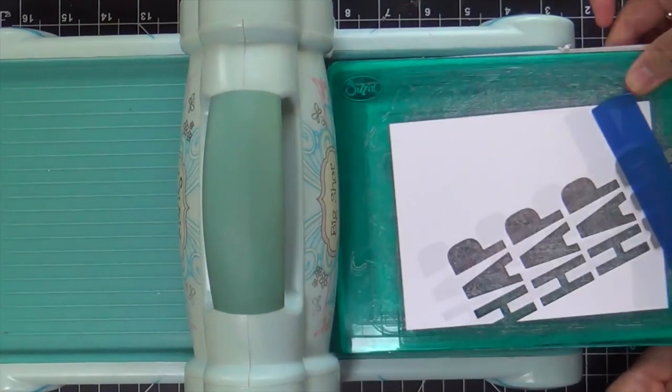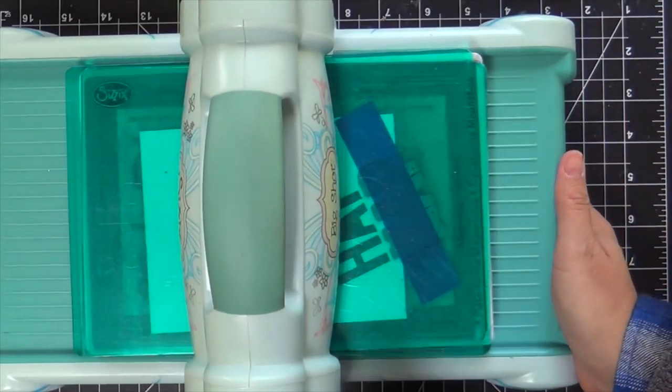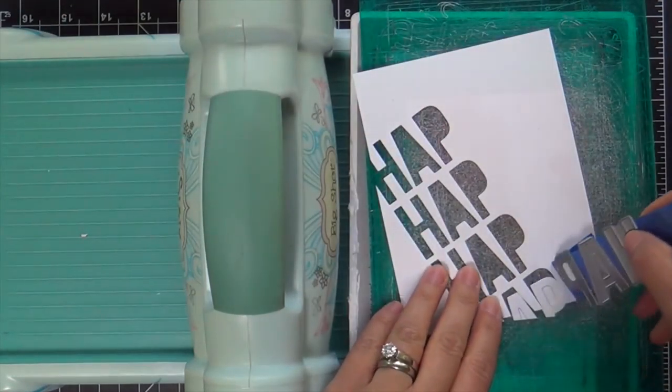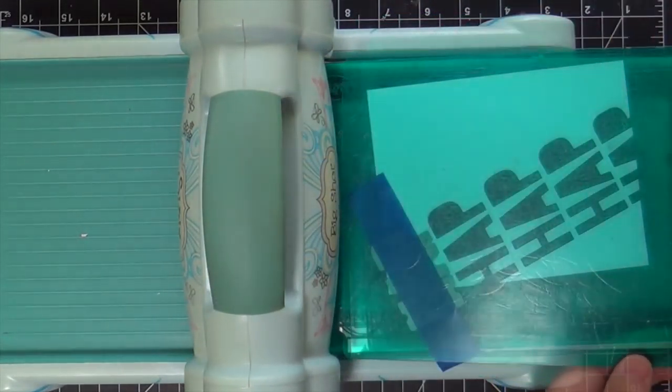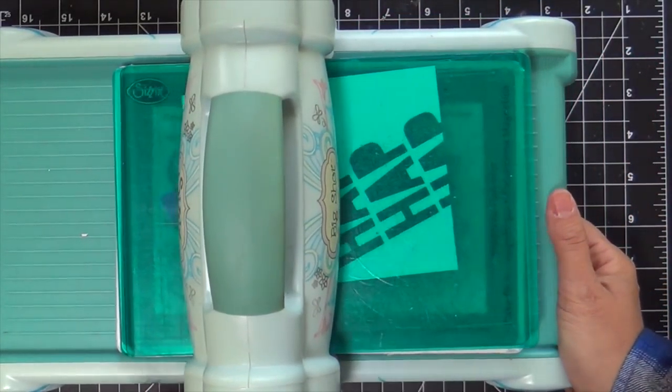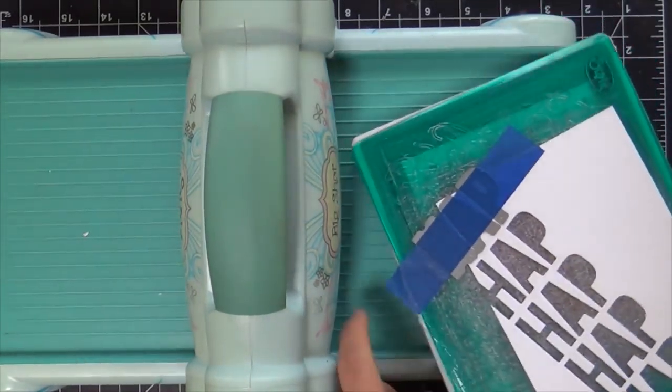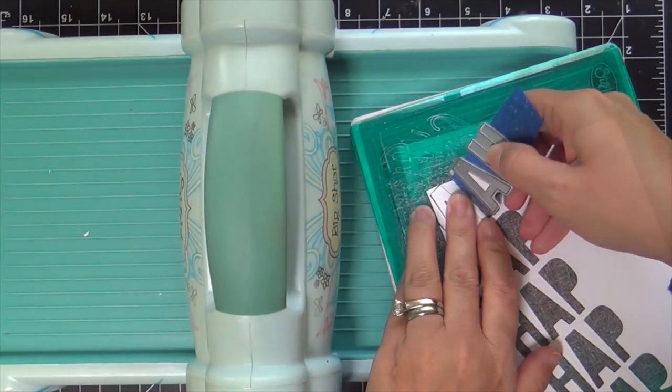it into a shaker card. If it's a shaker and has their name, they are so happy you could peel them off the ceiling. Kids, especially 13-year-old girls—if you put their name on it and make it a shaker card, you just made their whole year. For this one, I'm going to die cut